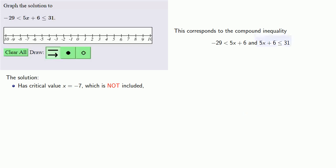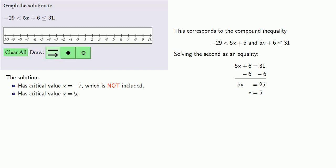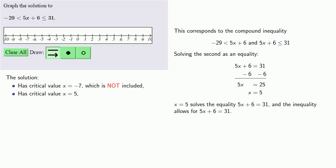Now we'll solve the second as an equality: 5x plus 6 equals 31. Solving that tells us that x equals 5 is a critical value. A good math student or a good human being would recognize that the inequality exists and act accordingly. x equals 5 solves the equality 5x plus 6 equals 31, and the inequality allows for 5x plus 6 to equal 31.